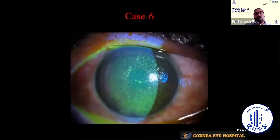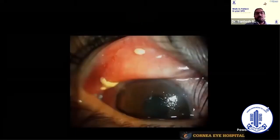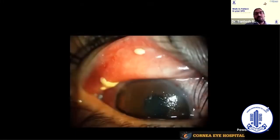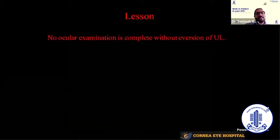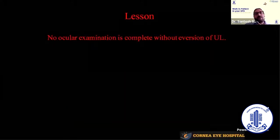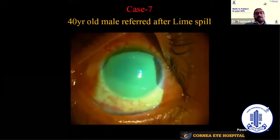A six-year-old boy was brought by his parents saying he couldn't open one eye. Many times patients won't volunteer a history of chemical injury. When we everted the upper eyelid, there were a lot of lime particles in the upper fornix and other places. Simple removal of the offending agent was sufficient to treat this patient. The lesson is: no examination is complete without eversion of the upper eyelid.